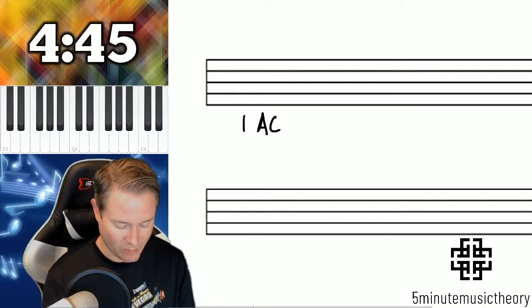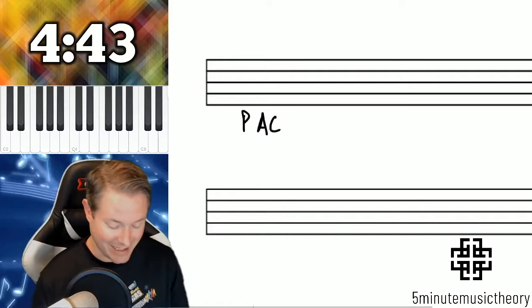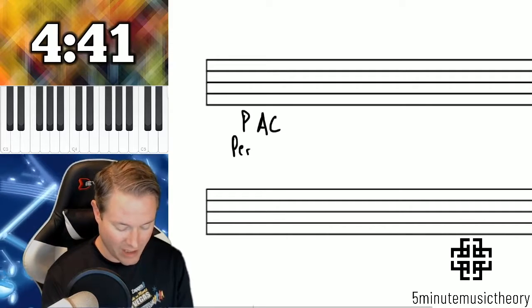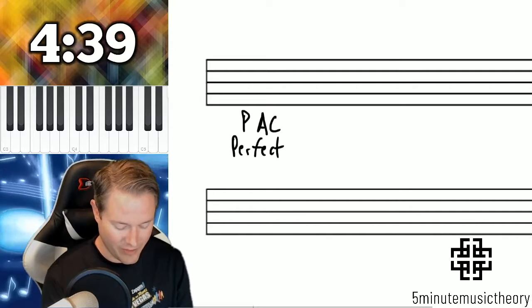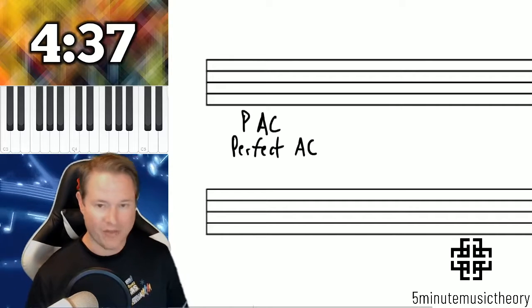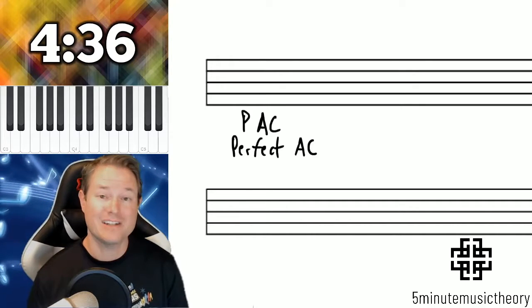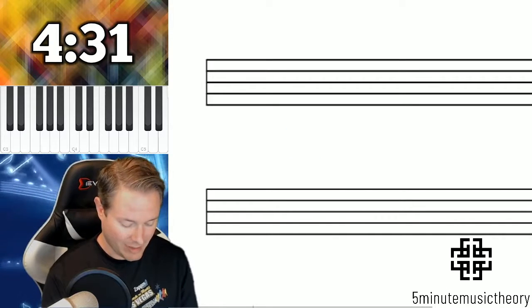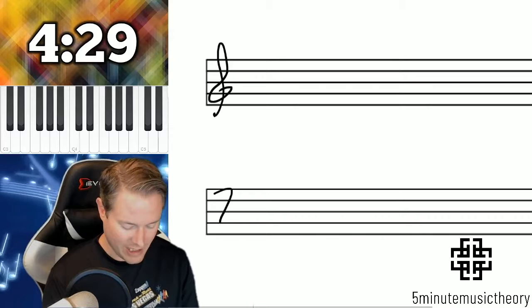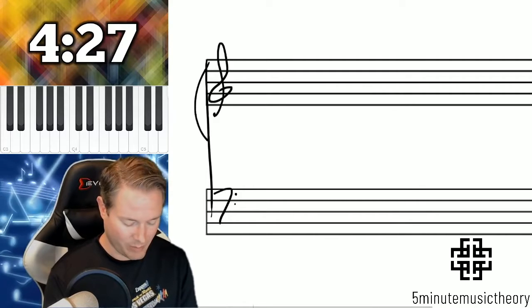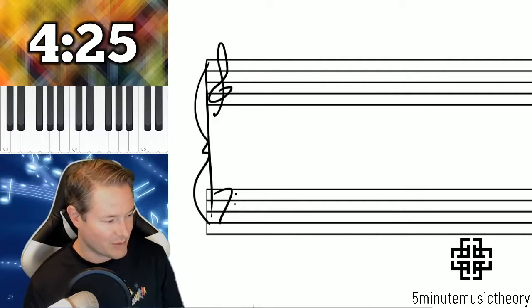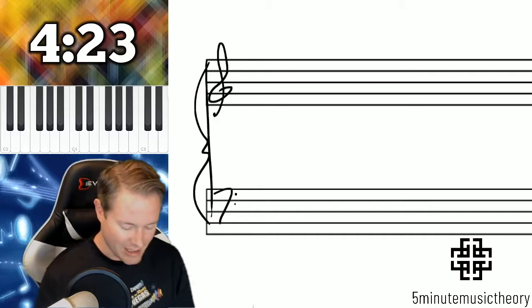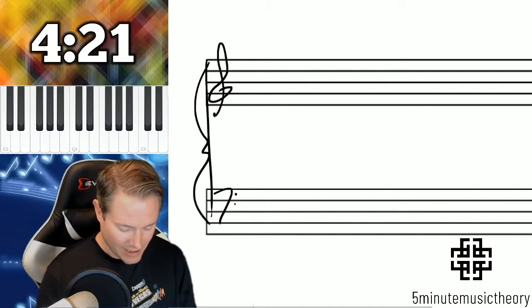So that's the AC portion of this. We're going to talk in this video about a PAC, which is the perfect authentic cadence. I don't need to put authentic cadence because we already talked about that. So the perfect authentic cadence is actually the strongest and most conclusive of all of the cadences. And I'm going to show you an example of a PAC, and I'll actually probably refer to them as PACs.